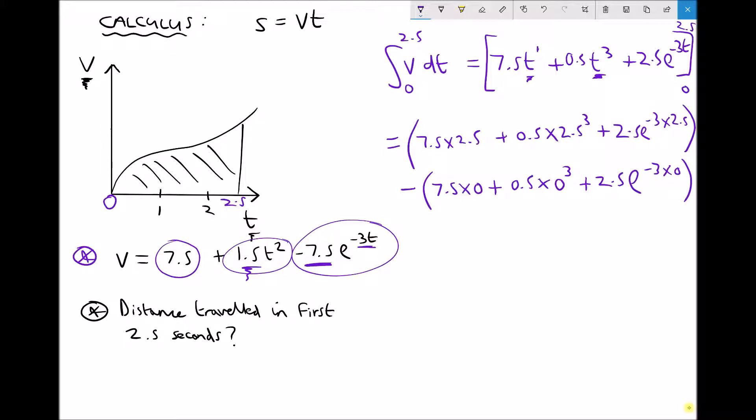So evaluating my first bracket, I get 26.564. And for my second bracket, I get 2.5. Therefore, the value of the integral between the limits of 0 and 2.5 equals 24.064.